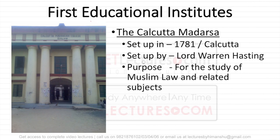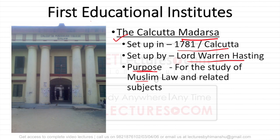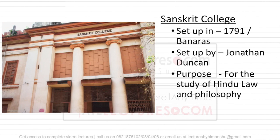The first education institute established in India was the Calcutta Madarsha. It was established in 1781 in Calcutta and it was started by Lord Warren Hastings. The basic purpose was the study of Muslim laws and related subjects so that they could easily handle dealings with the Muslim community.